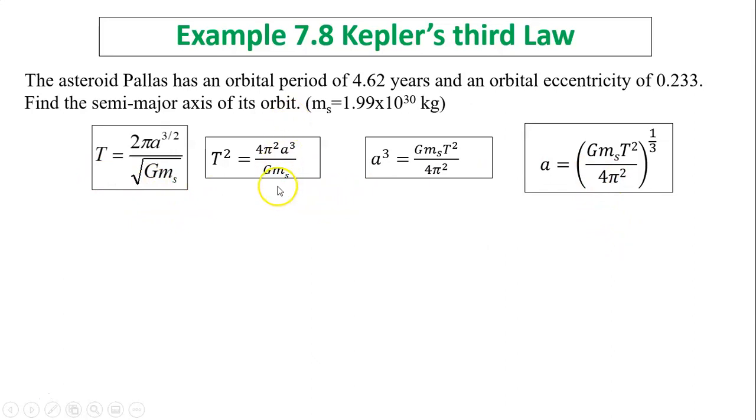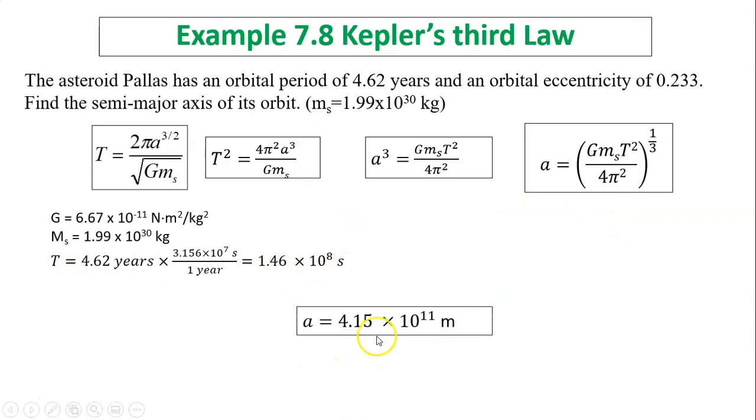So first, you square both sides. Then you figure out A cubed. Finally, you find A by substituting your numbers. Make sure you have T changed into seconds first. And then your A is 4.15 times 10 to the 11 meters.